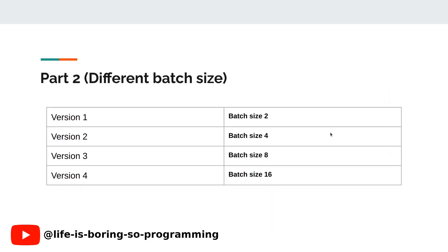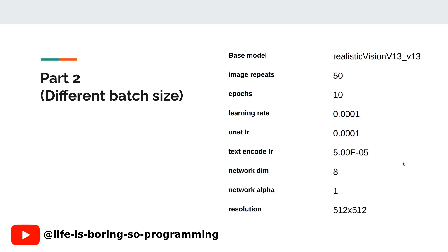In today's experiment, we will test 4 different sets of parameters, version 1 to version 4. Version 1 will use batch size 2. Version 2 will use batch size 4. Version 3 will use batch size 8. Version 4 will use batch size 16. The other training parameters are as follows. The base model is Realistic Vision.